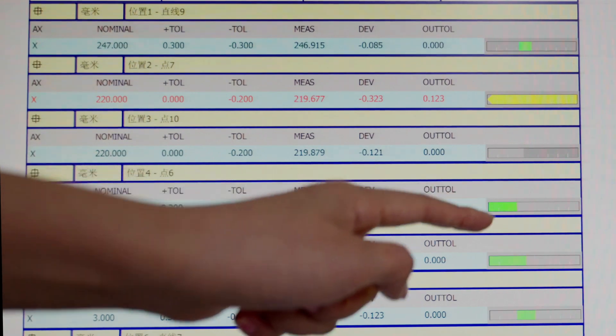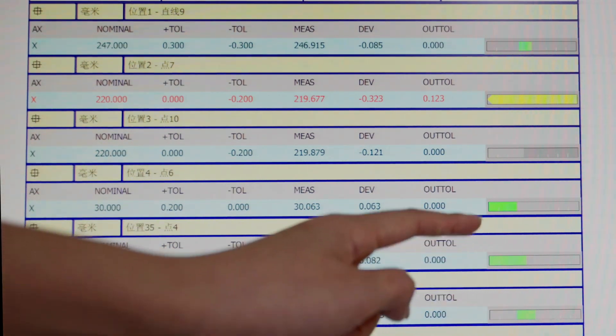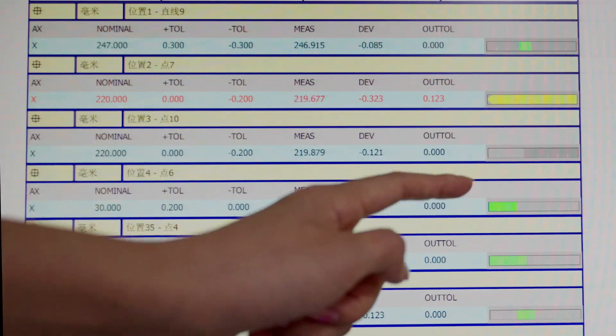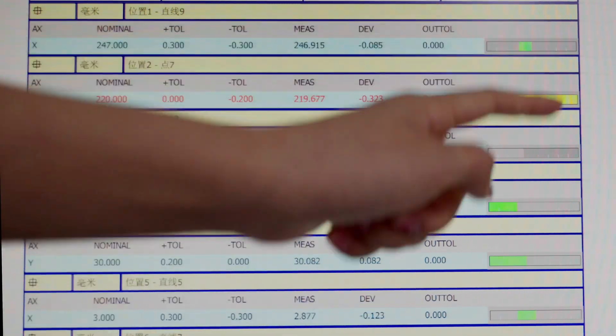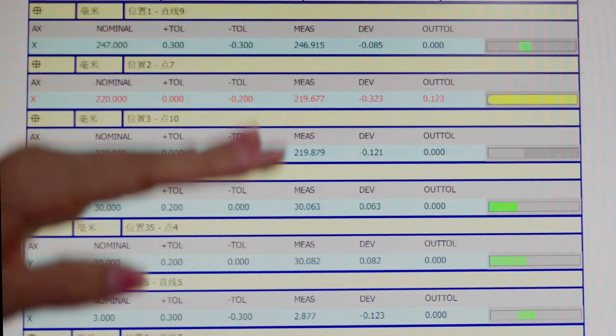But if the color is green, that means the inspections and dimensions are good so that we can go on and pass these aspects.